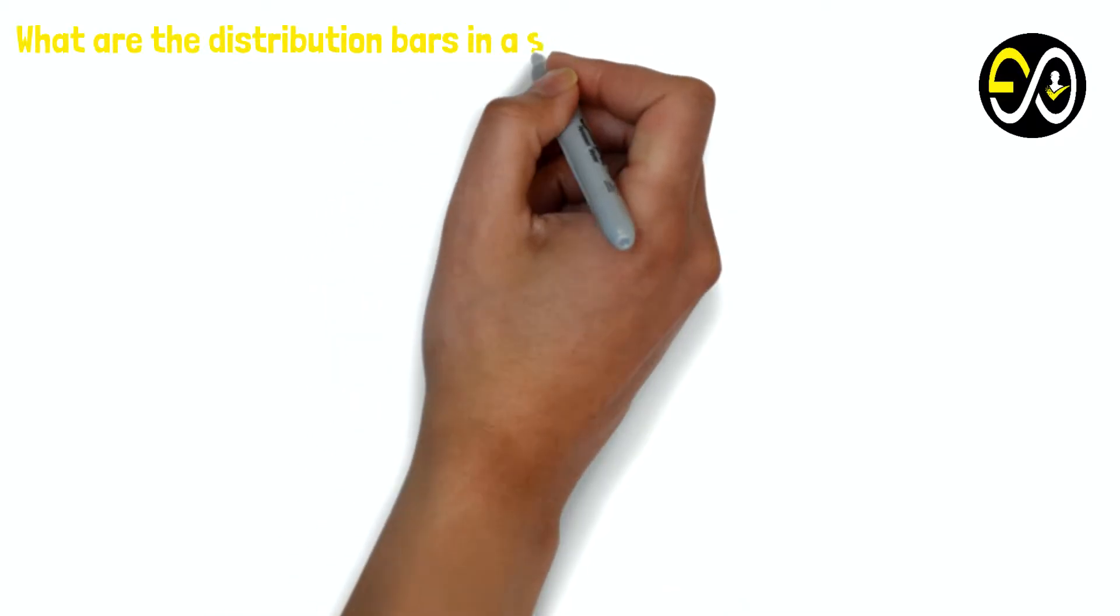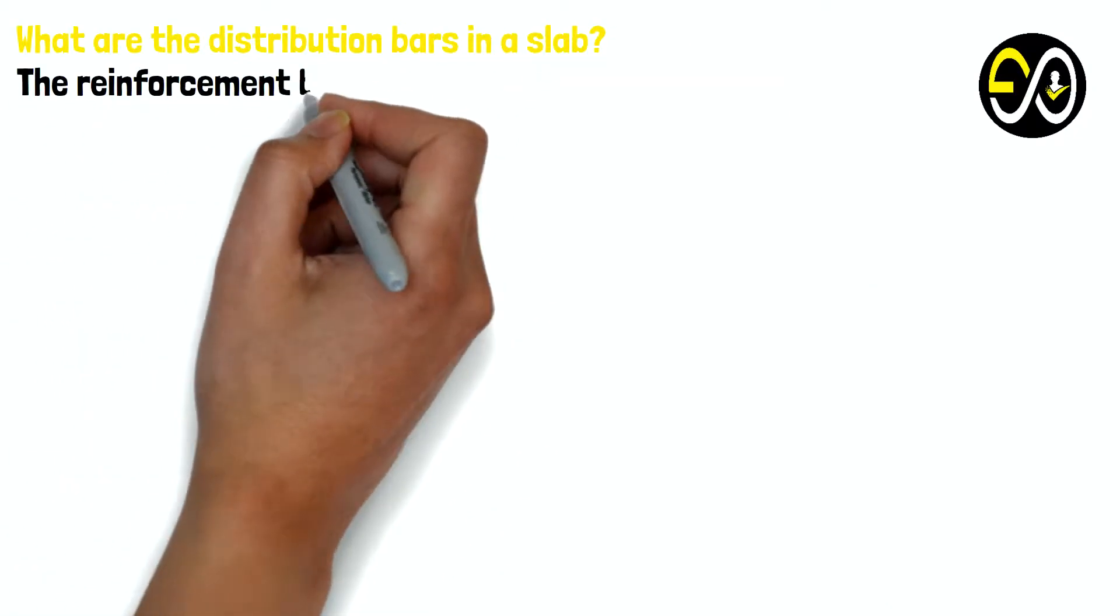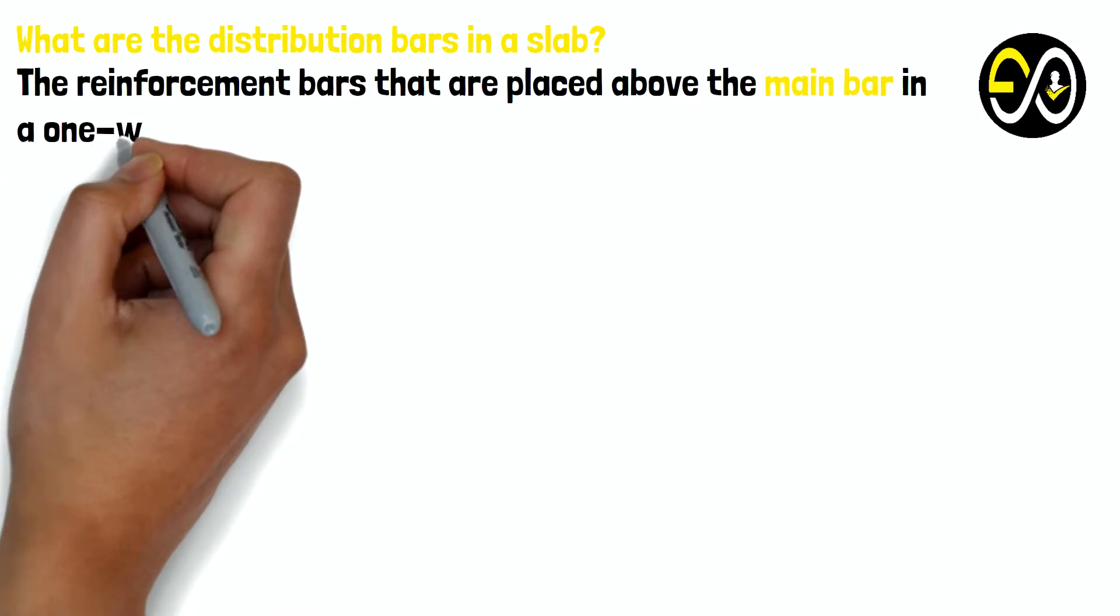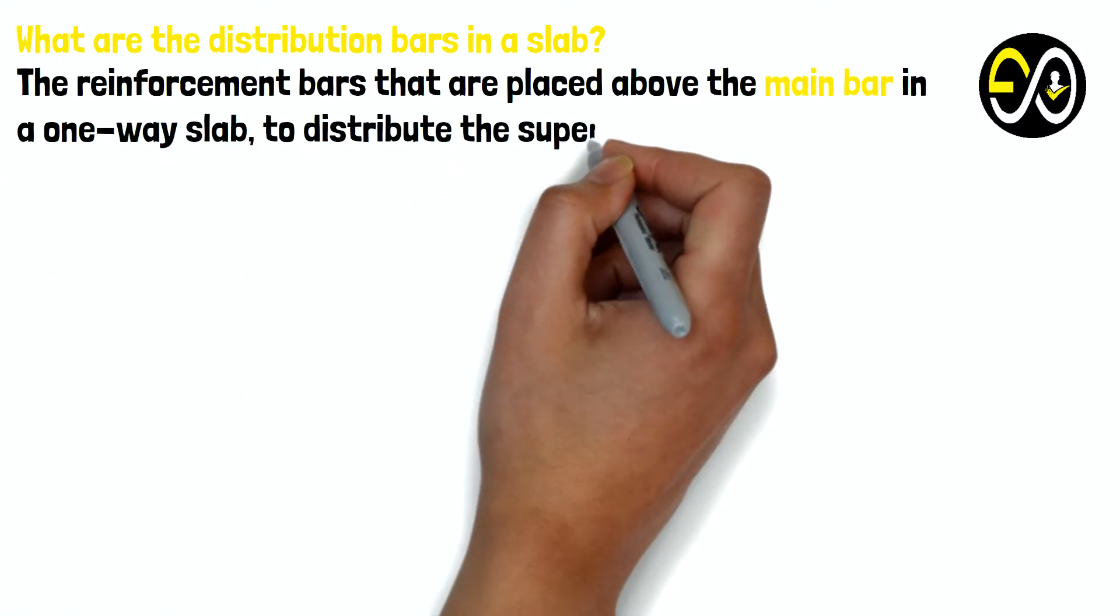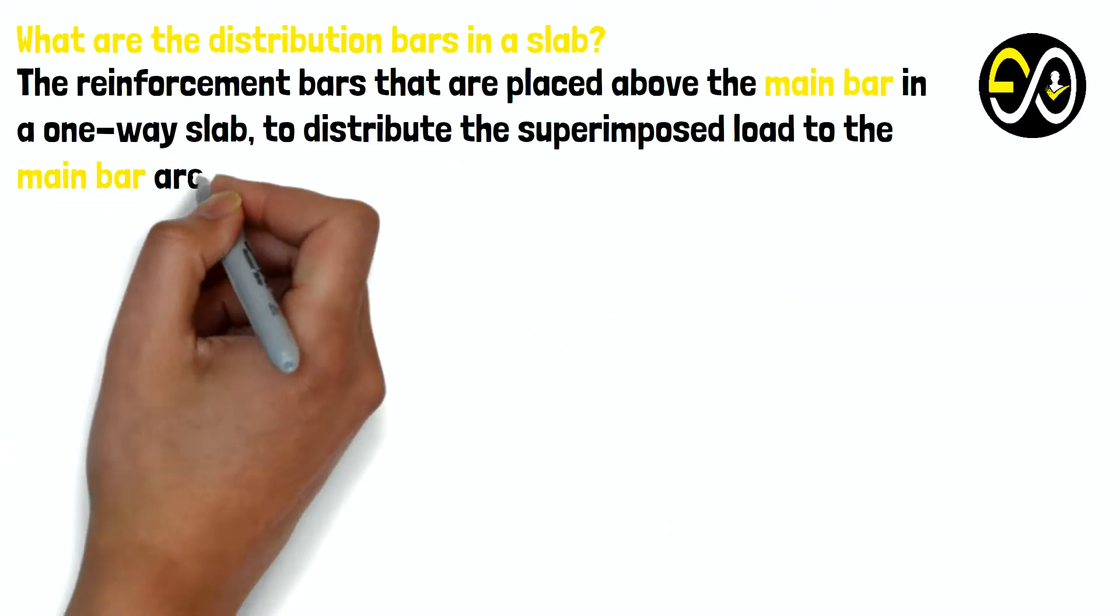What are the distribution bars in a slab? The reinforcement bars that are placed above the main bar in a one-way slab to distribute the superimposed load to the main bar are called distribution bars.